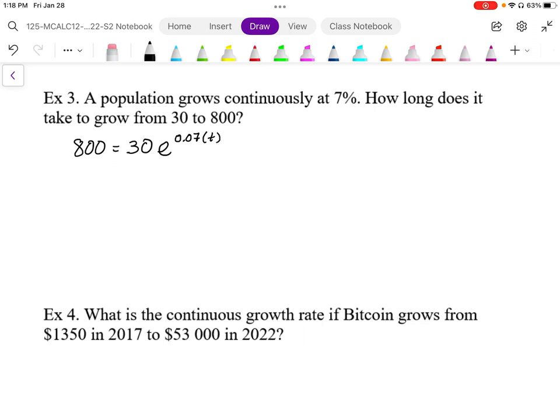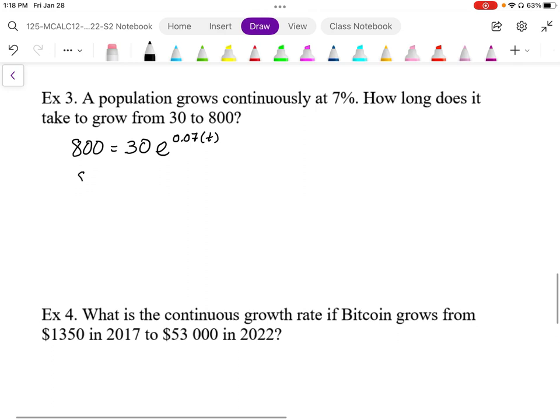So in this case, we're going to need to use a log to solve this. First thing is, I'm going to divide 800 by 30. So I get 80 over 3 when I simplify this.